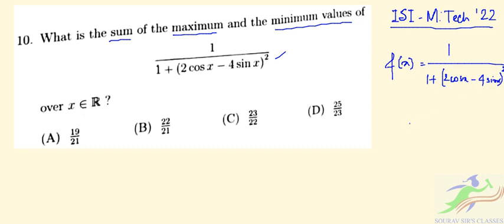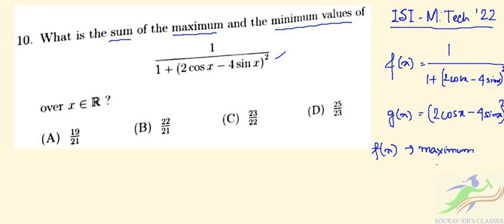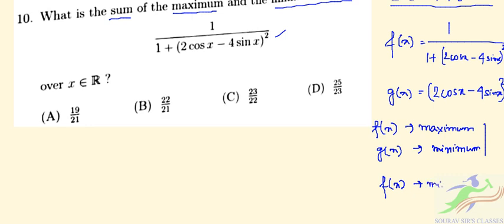Let us take an auxiliary function g(x) = (2cos x - 4sin x)². Now, f(x) will be maximum when g(x) is minimum, and f(x) will be minimum when g(x) is maximum. So let us start by finding the value of g(x), and then we will calculate f(x). We begin by taking the derivative of g(x).